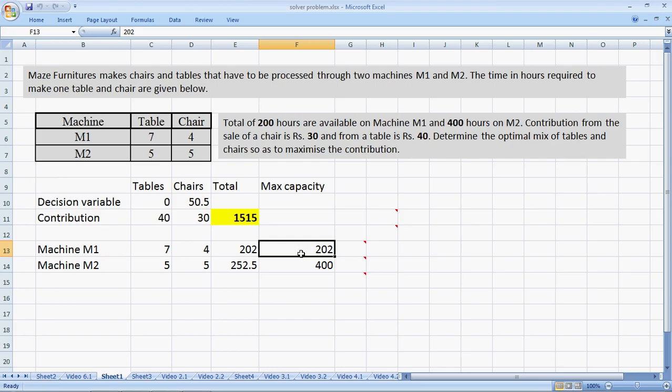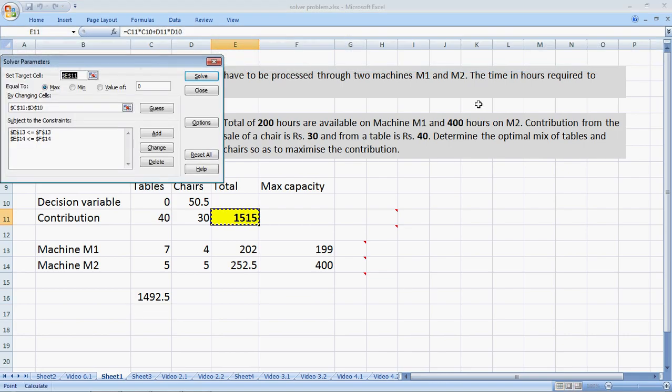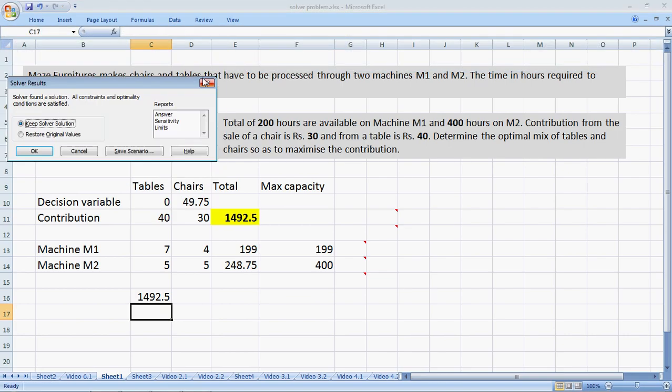All right, let me do it here. I reduce the capacity by 1 unit, 199 from the original 200. And if everything works out, our contribution must be equal to 1500, which was the original contribution, minus 7.5. So it should equal 1492.5. Let's check it out. We go to data, solver, solve. Wonderful.